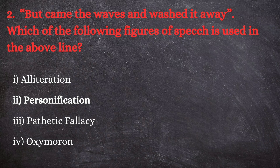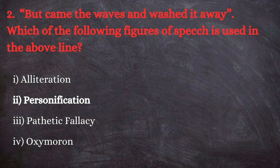The options are: first, alliteration; second, personification; third, pathetic fallacy; and fourth, oxymoron. The correct answer is personification. Here the wave is personified as if it is coming as a human being and washing away the endeavor of the poet. So waves, an inanimate object — an element of nature — is given human attributes: a case of personification.